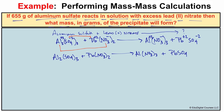Before we can start stoichiometry, we have to make sure our chemical equation is balanced. We can balance it by placing a 3 in front of lead two nitrate and a 2 in front of aluminum nitrate. Now our chemical equation is balanced — we have the same number of each atom on both sides of the arrow.